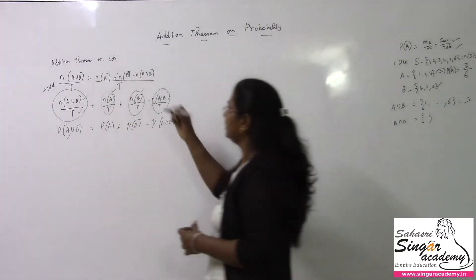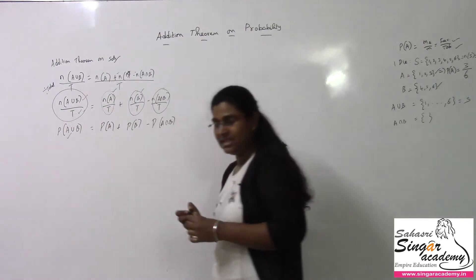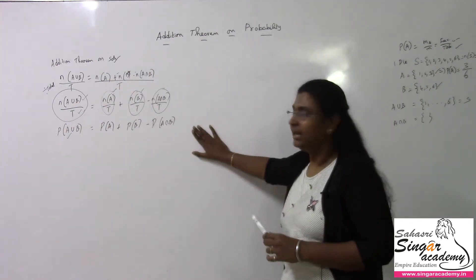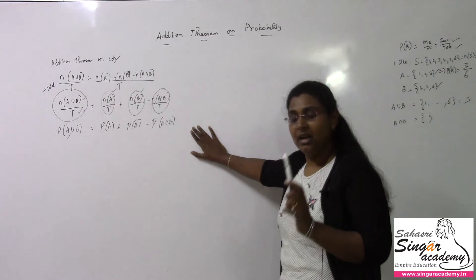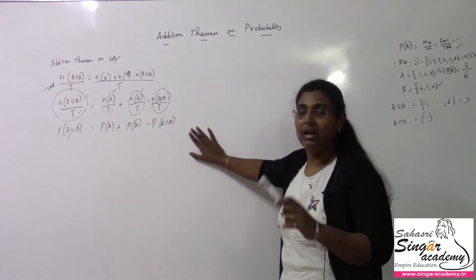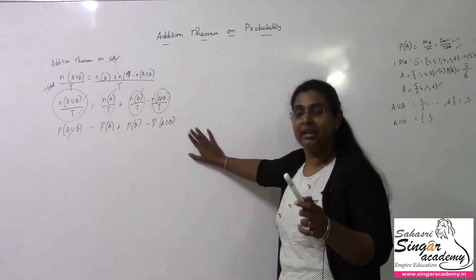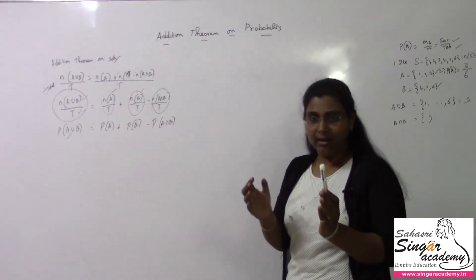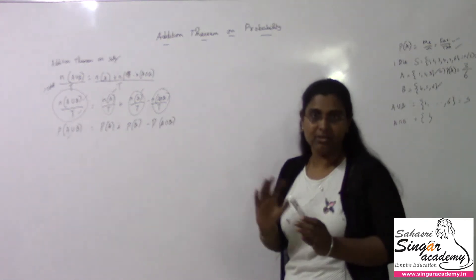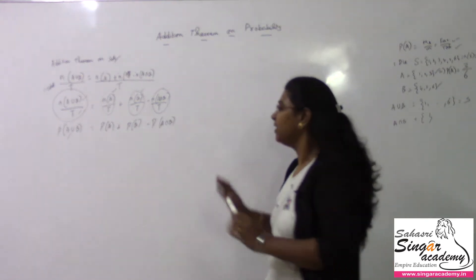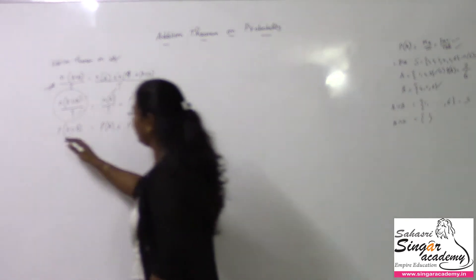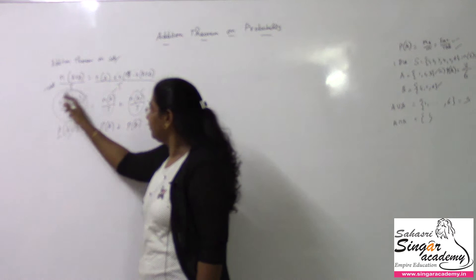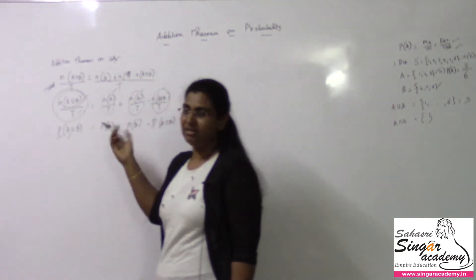We arrive at the addition theorem on probability from the addition theorem on sets. If you look at each concept — sets, events, symmetric difference, A minus B — the same structure applies. The only difference is that probability means number of favorable outcomes divided by total. So it will be simple.